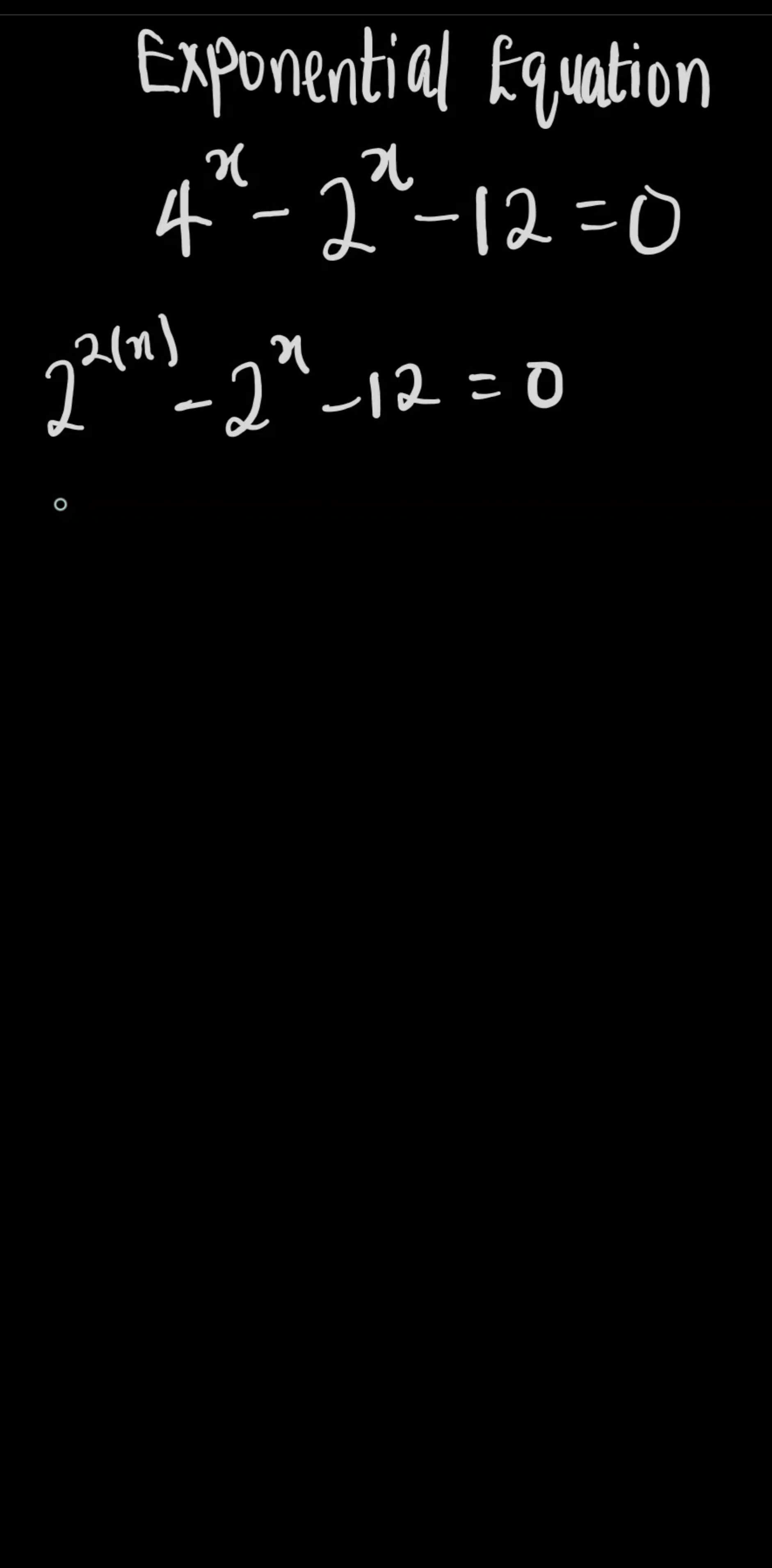Now writing this again, we can say that this is 2 to the power of x all squared minus 2 to the power of x minus 12 equals 0.